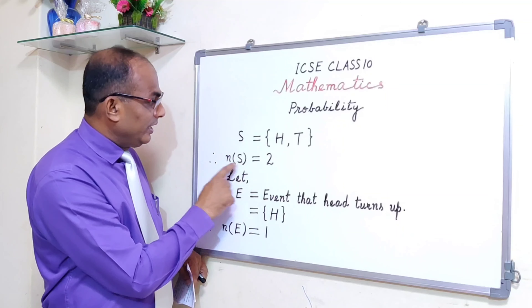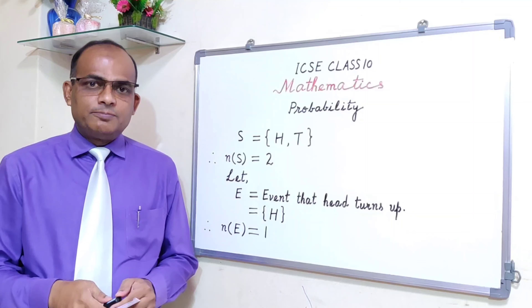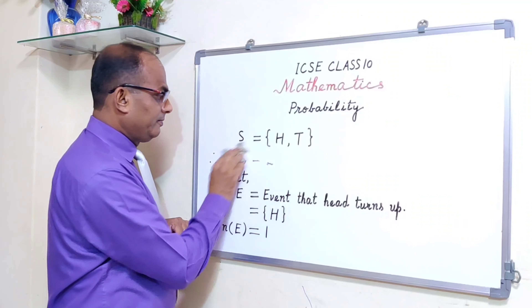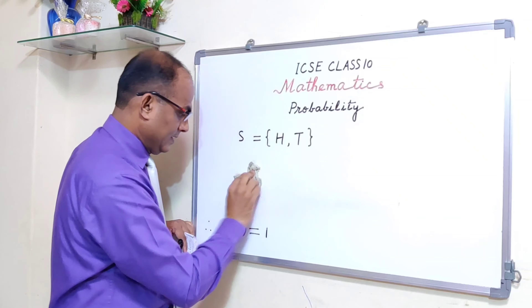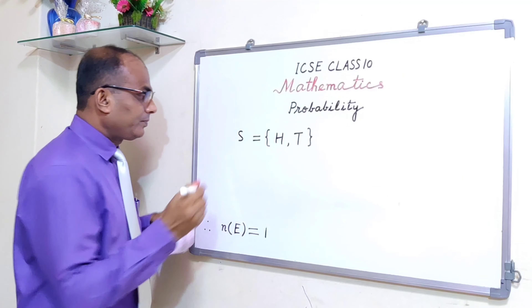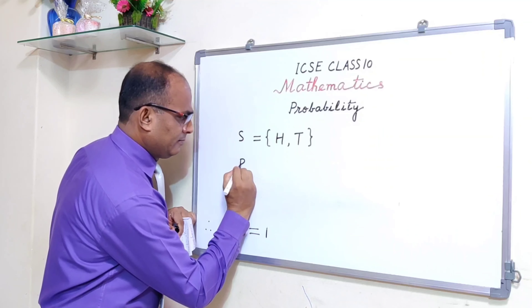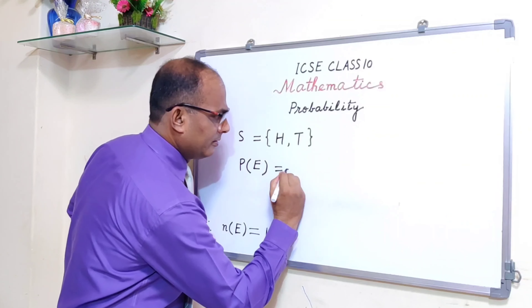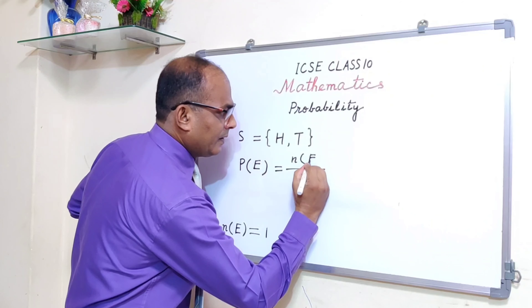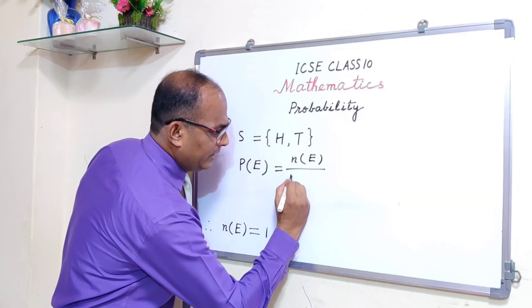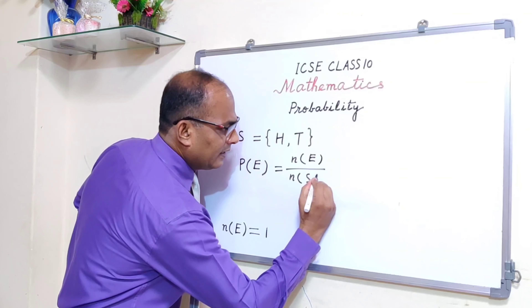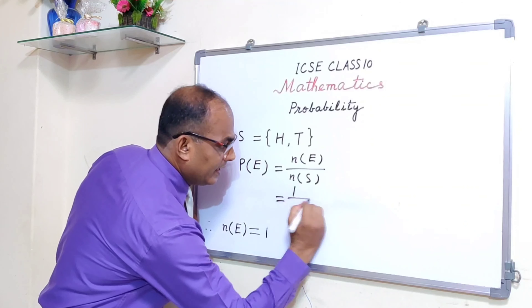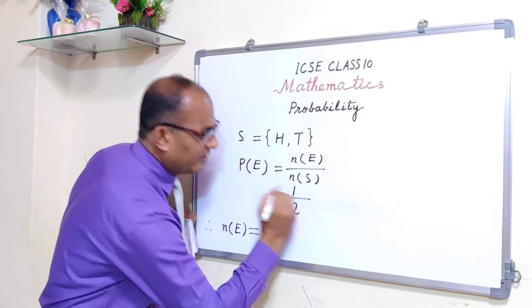We know n(E) and n(S), and the formula from Part 1: Probability of E = n(E) upon n(S). Here n(E) = 1 and n(S) = 2, so the answer is 1/2.